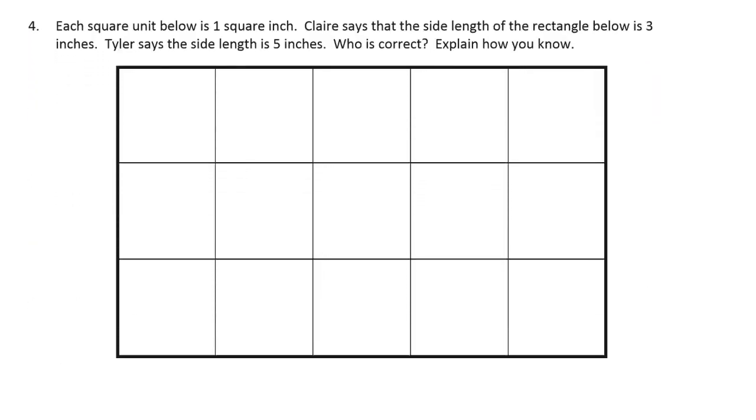Each square unit below is one square inch. So that's a square unit. That's a square inch. Claire says that the side length of the rectangle below is three inches. Tyler says the side length is five inches. Who is correct? Explain how you know.